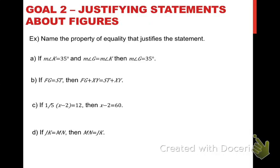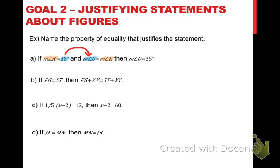Now let's see if you can recognize those properties being put into use. The examples ask you to name the property of equality that justifies the statement being made. First, it says that the measure of angle K equals 35 degrees, and the measure of angle G equals the measure of angle K, then the measure of angle G equals 35 degrees. Notice here that I have two different quantities — 35 degrees and the measure of angle G — that are each equal to the same thing, the measure of angle K. Since they're each equal to the same thing, that makes them equal to one another. That's the transitive property of equality.